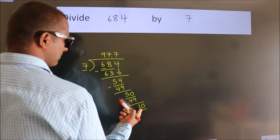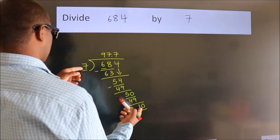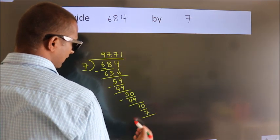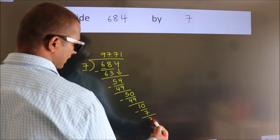So, 10. A number close to 10 in the 7 table is 7 nines, 7. Now we subtract and get 3.